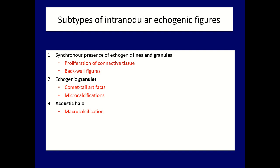There are five types of intranodular hyperechoic figures which we have to deal with. I classified them in this table corresponding to their ultrasound presentations. If we see synchronous lines and granules, these hyperechoic figures are either proliferation of connective tissue or backwall figures, with minimal, if any, oncological importance. The differentiation depends on the presence of cystic areas ventral to the hyperechoic lines. The second form is characterized by the presence of granules — comet tail artifacts and microcalcifications belong to this sub-group. A microcalcification is characterized by the dorsal acoustic shadow.